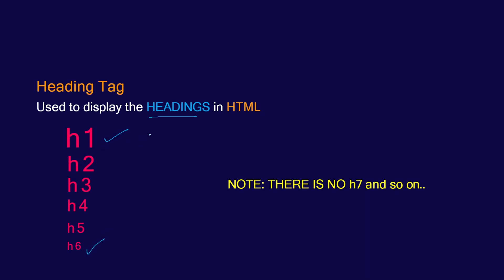H1 has a specific font size which is greater than H2, H3, H4, H5, and H6. H2 is greater than H3, H4, H5, and H6. In the same way, they are in descending order of their font size.